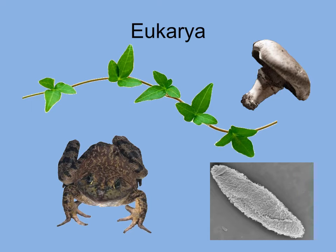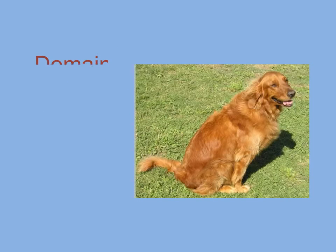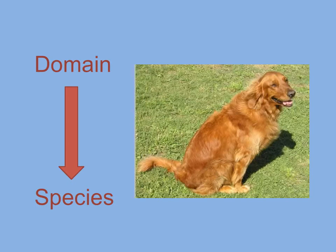Organisms in each of the domains are grouped into various taxa based on their similarities. Let's go from the most general taxon — the domain — to the most specific taxon — the species. Dogs are composed of eukaryotic cells and are placed in the domain Eukarya. The other taxa in increasing order of specificity are kingdom, phylum, class, order, family, genus, and species.